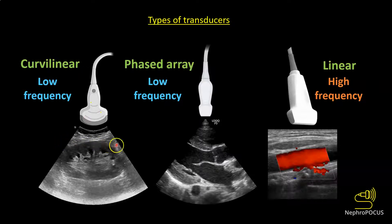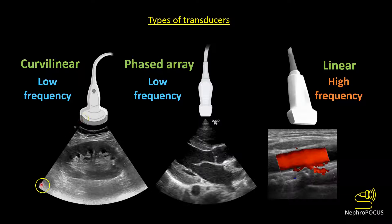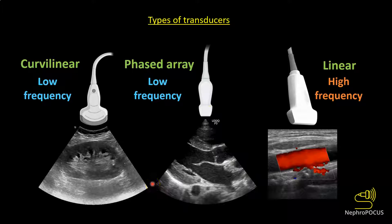Just by looking at how the ultrasound image appears, we can tell what transducer was used. In a curvilinear transducer, the piezoelectric crystals are arranged in a C-shape and the image appears like a fan covering a wider area. With the cardiac probe, the crystals are arranged at the center and the beam emerges from one point, giving a pie or pizza-slice appearance — facilitating movement between rib interspaces. In the linear probe, crystals are arranged linearly, producing a more rectangular image.